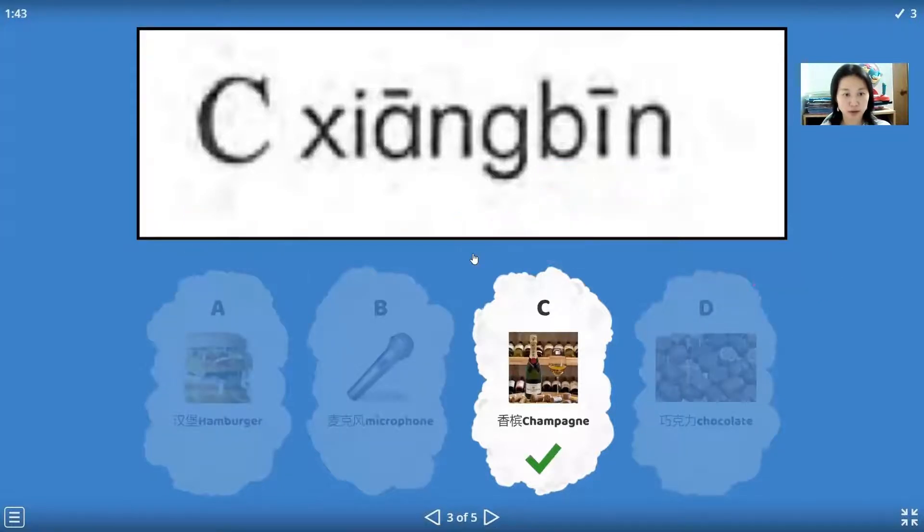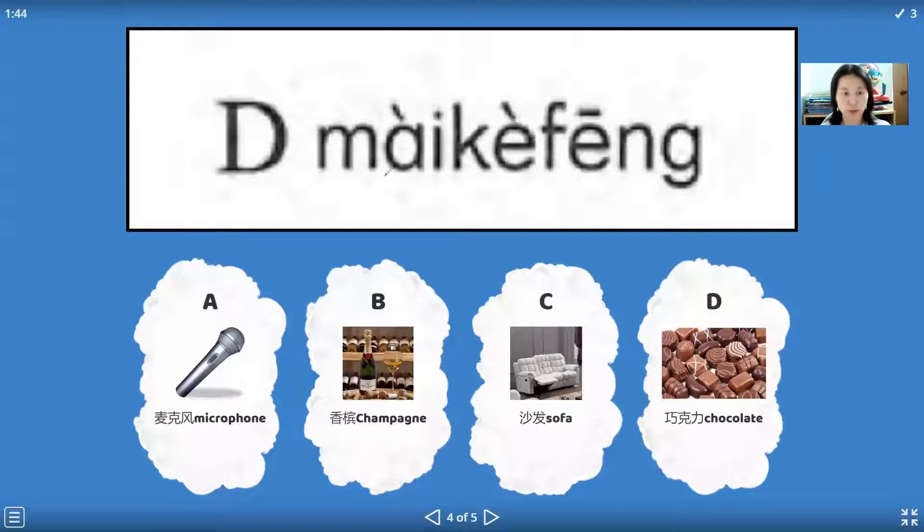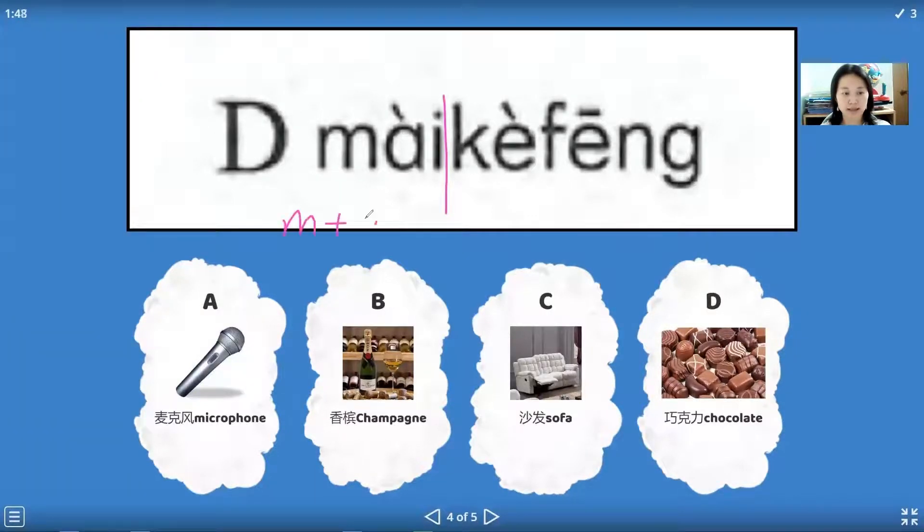Next one, this one we say mu, ai. And this ai, just so similar, just like we say like. Le ai, like. Okay, this one is ke, e, ke. Maai ke. The last one is fo, en, feng. Maai ke feng.